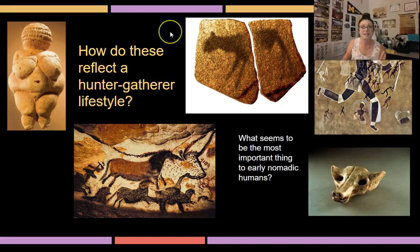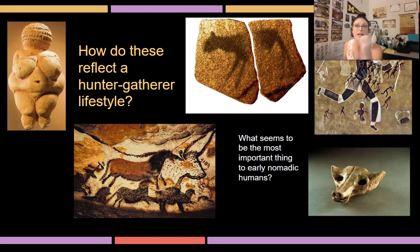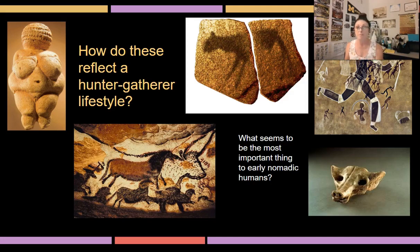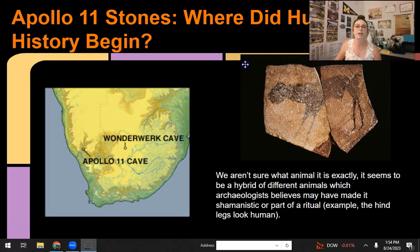These are the pieces we're going to look at for prehistoric art — except the Venus figurines, which are not on the AP 250. The people who wrote the curriculum chose these pieces because they are very good evidence of what we know about prehistoric people: that animals were a really big deal, that they were nomadic hunter-gatherers, and that they created art for very specific purposes, even if we're not 100% sure what those were.